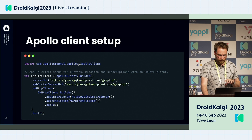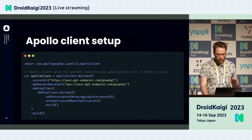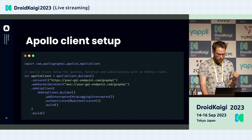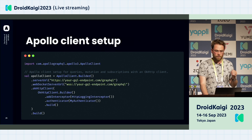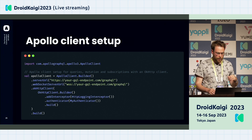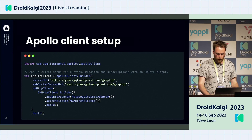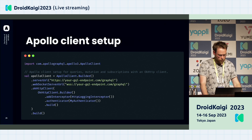Now let's see the Apollo client setup — it's very straightforward if you're used to building a Retrofit client. You call your Apollo client builder and set up the server URL and the WebSocket server URL if you have any. Then you can take advantage of using the OKHttp client if you're already using it for your REST implementation, defining it with interceptors like an HTTP logging interceptor or an authenticator.